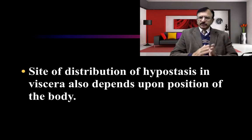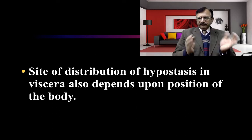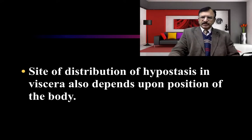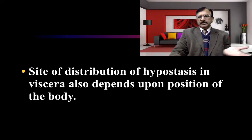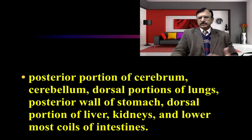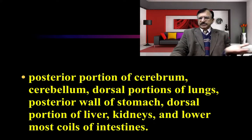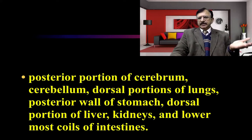Pertaining to today's topic — the internal appearance of hypostasis — the site of distribution on the viscera also depends upon the position of the body, because the blood will gravitate to the dependent regions of the viscera. Normally, when the person is in the supine position, hypostasis will be seen on the dependent areas: the back of the cerebrum and cerebellum, dorsal portions of the lungs, posterior surface of the stomach, dorsal portion of the liver, kidneys, and the lowermost coils of the intestine.